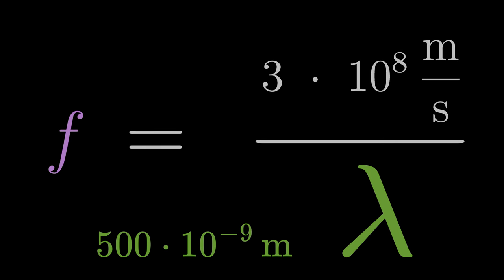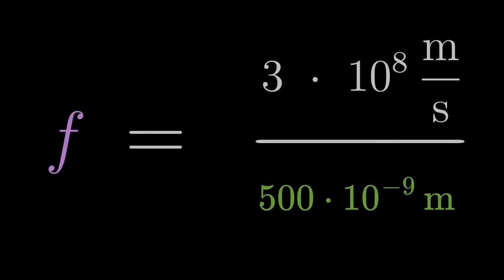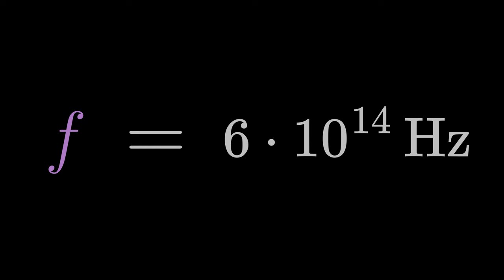F is equal to C by lambda. If we insert the speed of light and the wavelength, we get the frequency of this light, 6 times 10 to the power of 14 hertz.